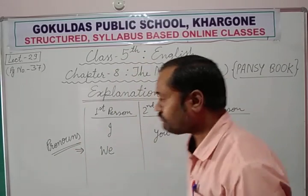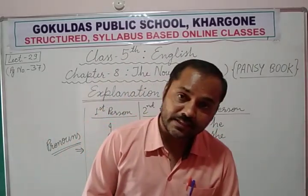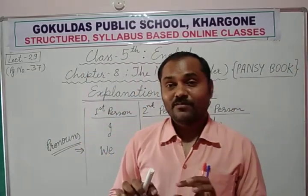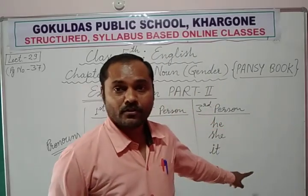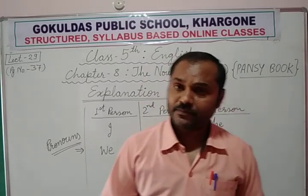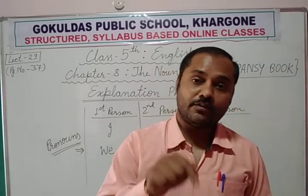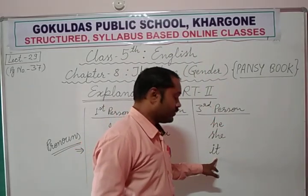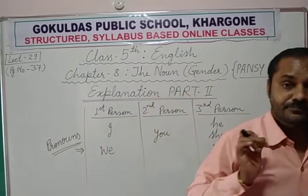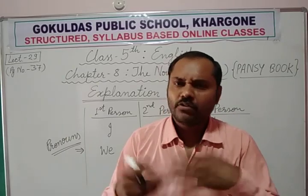He and she are used for the third person. We may also talk about it. It is a pronoun generally used for non-living things — it is a marker, it is a board, it is a fan, it is a mobile. It is also used for animals and trees, even though they are living things. So it is used for non-living things and also for plants and animals.